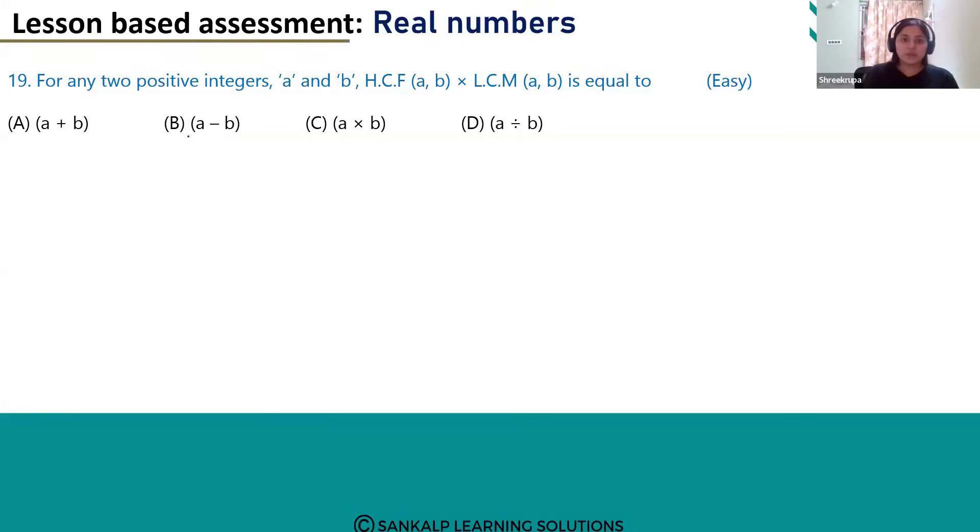So here we have to find out the value of HCF of A and B. A and B are positive integers and LCM of A and B. When we multiply these two, what will we get? That we have to identify.